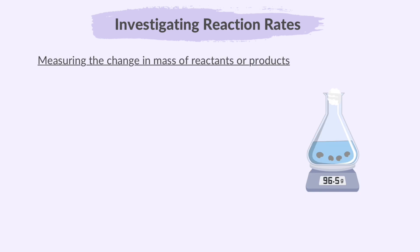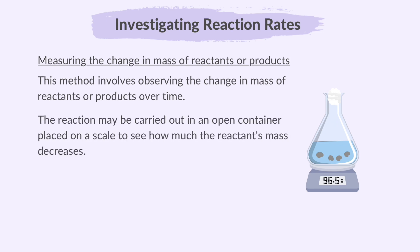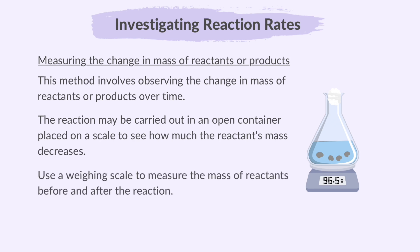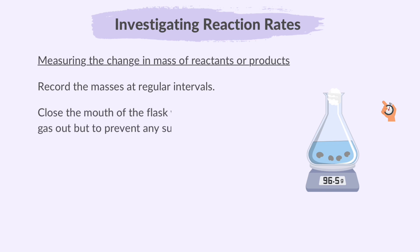Measuring changes in mass of reactants or products involves observing the change in mass of reactants or products over time. The reaction may be carried out in an open container placed on a scale to see how much the reactant's mass decreases. We use a weighing scale to measure the mass of reactants before and after the reaction. Record the masses at regular intervals. Close the mouth of the flask with cotton wool to let the gas out but to prevent any substances spilling out.